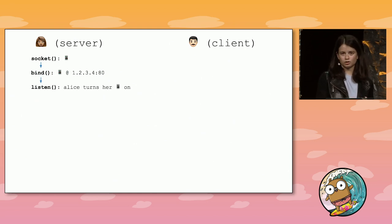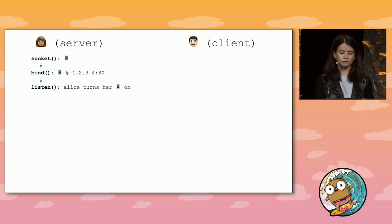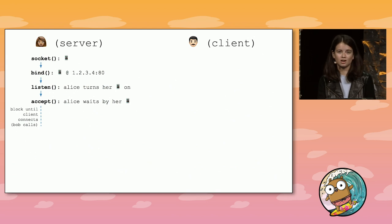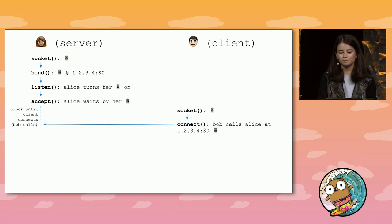Now, the server calls listen to allow its stream socket to accept incoming connections from client sockets. In our phone analogy, calling listen is like Alice turning on her phone so she can receive Bob's phone call. Next, the server calls accept. Accept won't actually do anything until a client connects — instead, it blocks and waits until the client sends a connection request. So Alice is waiting by her phone for Bob, our client, to call.